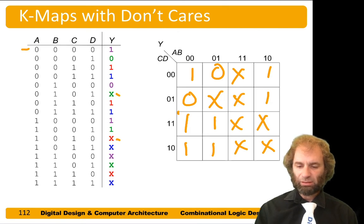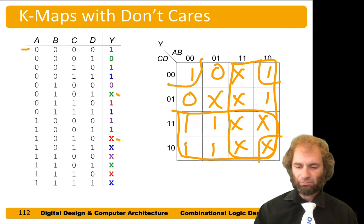Here we have a giant 4-by-2 block. Here we have another giant 4-by-2 block. Here we can circle the four corners. And there's a leftover X here - we don't have to circle it, and circling it doesn't make it any simpler.